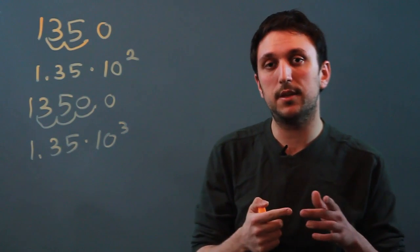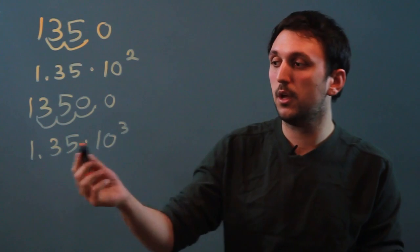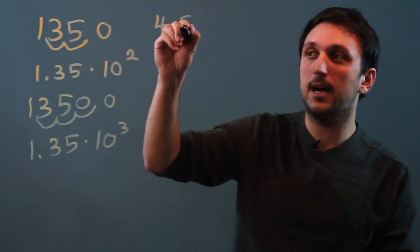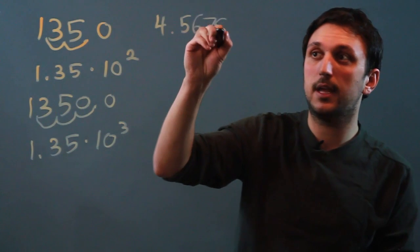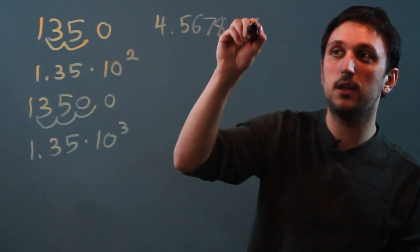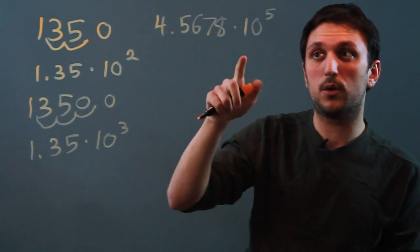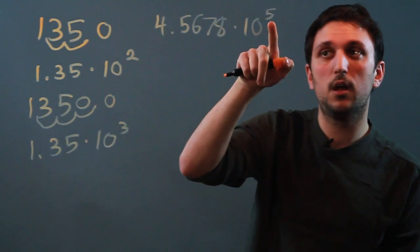back from scientific notation to regular numbers. So imagine we had 4.5678 times 10 to the fifth. And we want to convert that back to a normal number. Well, we look at this 5 and we say,